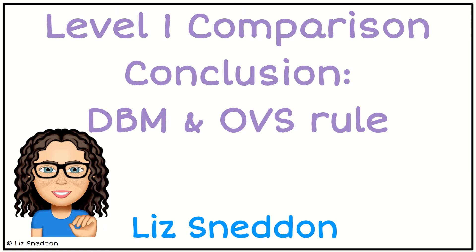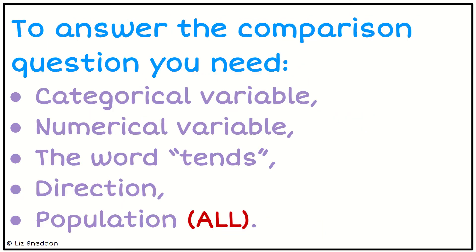Hi, it's Liz Sneddon. Let's have a look at level one comparison investigations and forming a conclusion using the DBM and OVS rule. This is particularly useful when we have secondary data and you've taken a sample size of a hundred per group or a thousand per group.